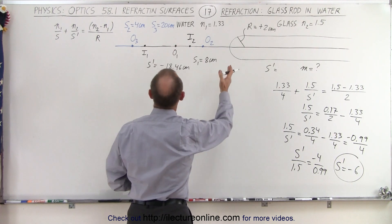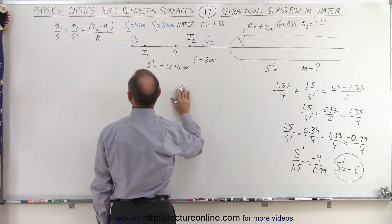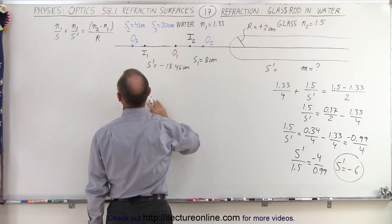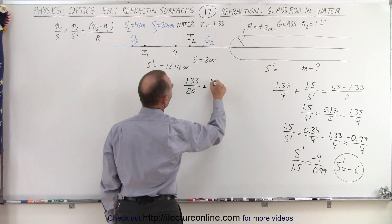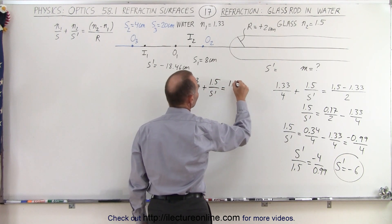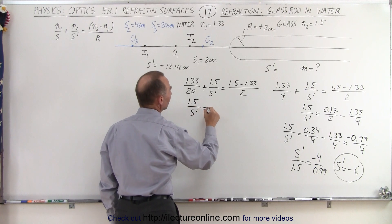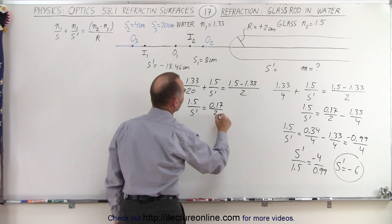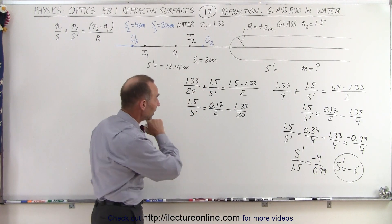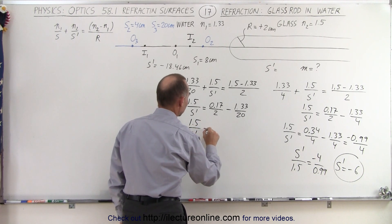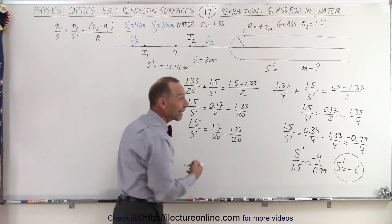Now let's put the object really far away at a distance of 20 centimeters and see what happens. We recalculate the image position: N1 over S, with N1 being 1.33, so 1.33 over 20, plus 1.5 over S prime, equals 1.5 minus 1.33 over the radius of curvature. So 1.5 over S prime equals 0.17 divided by 2 minus 1.33 divided by 20. The common denominator this time is 20, giving 1.7 over 20 minus 1.33 over 20, and you can see we're going to get a positive result.